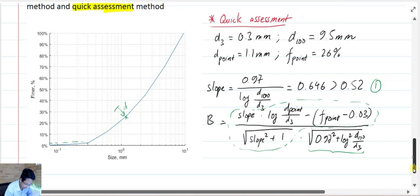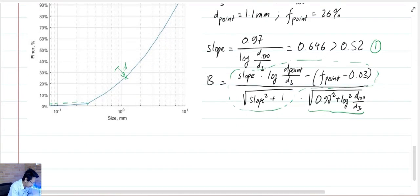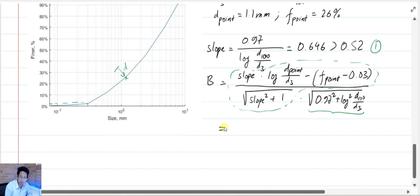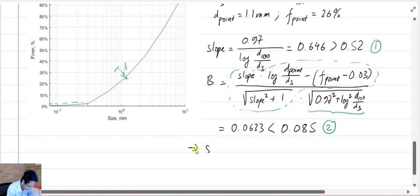So from here, I have my B equal to 0.0633 and it is smaller than the critical distance which is 0.085. So it's okay too. So from conditions 1 and 2, I can conclude that with the quick assessment method, my soil is stable.